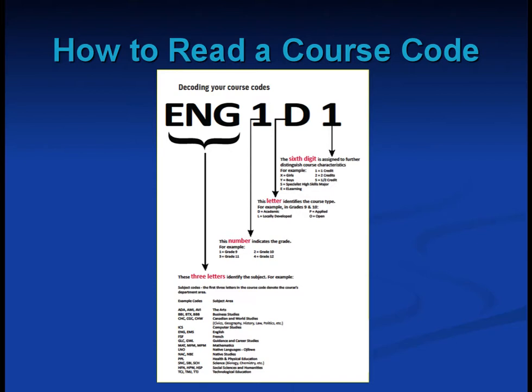It is helpful to review how to read a course code. The first three letters identify the subject. For example, ENG is English, SBI is Biology, NAC is Native Studies, and TTJ is Transportation Technology. Refer to your course calendar for a complete list.